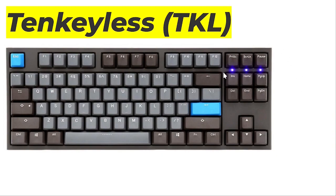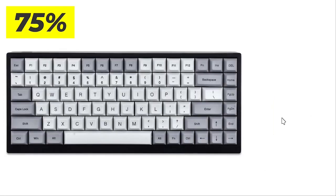But the navigation cluster and the arrow keys still take up a lot of space on the right. So what if we can somehow make this tighter? When you do that, you get what's called a 75% keyboard. You still have your arrow keys, you still have your navigation cluster,